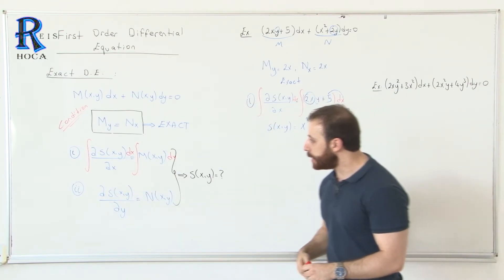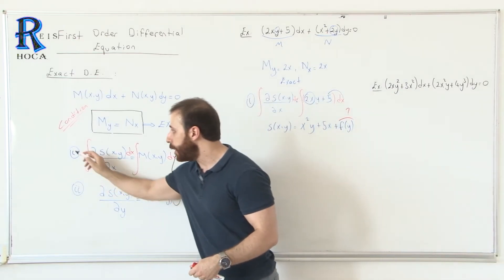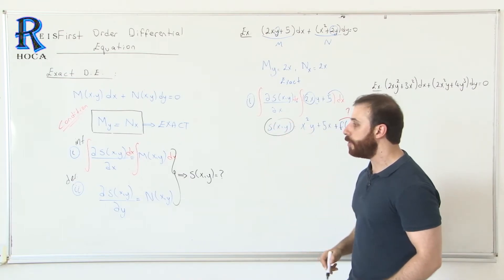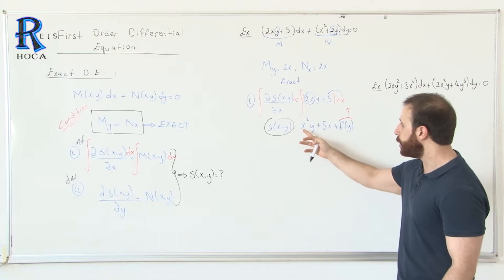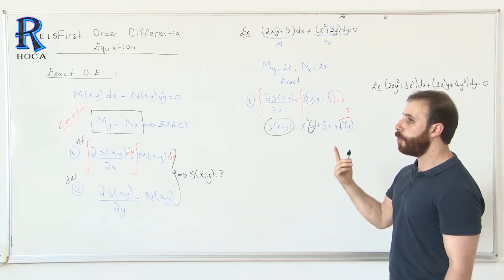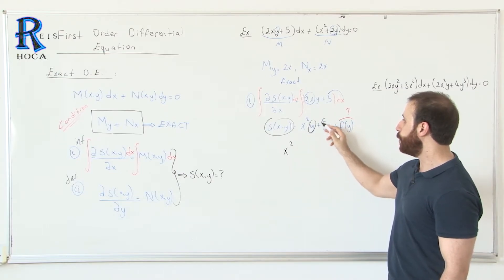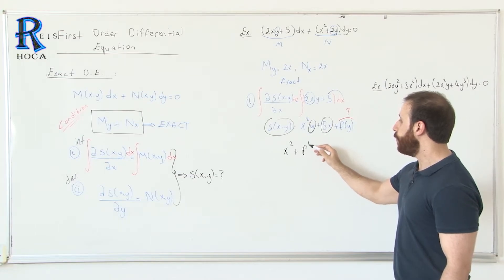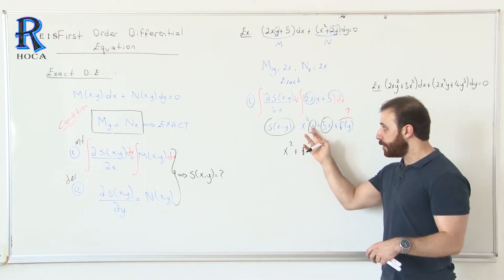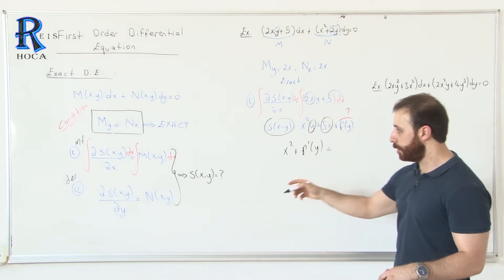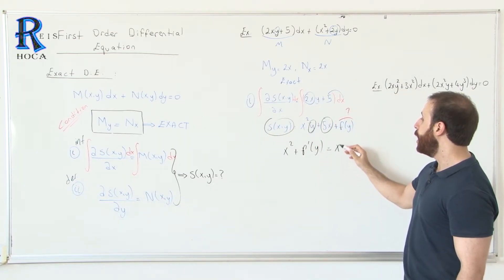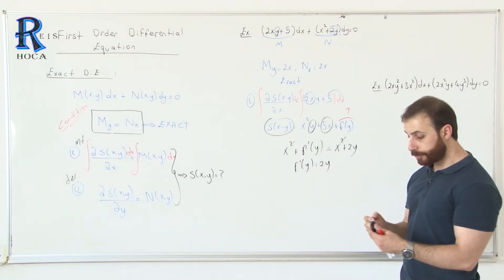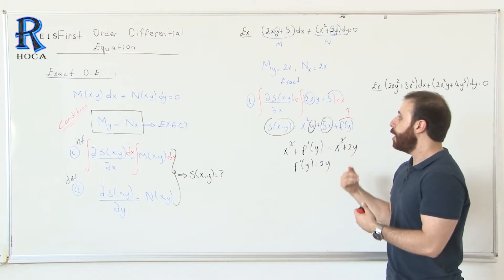For the second condition, we first take the derivative rather than the integral. We take the derivative of S with respect to y. S = x²y + 5x + f(y). The derivative of x²y with respect to y is x². The derivative of 5x with respect to y is 0, since there is no y. And the derivative of f(y) gives f'(y). This must equal N, which is given as x² + 2y. We see that x² cancels on both sides, leaving f'(y) = 2y.